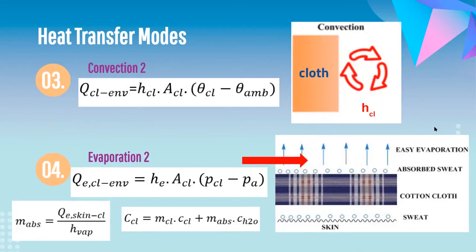Convection 2 is the heat exchange between the clothing surface and environment, calculated as H_C × A × (T_clothing surface − T_environment), where H_C depends on air velocity. For evaporation between clothing and environment, when moisture transfers from skin to clothing, humidity in the tissue increases. Water absorbed in the clothing is given by M_EBS, where ΔH_vap is the heat of vaporization of water, and heat capacity is modified accordingly for C_CL. Since we assume negligible sweat, the mass of H₂O can be neglected.